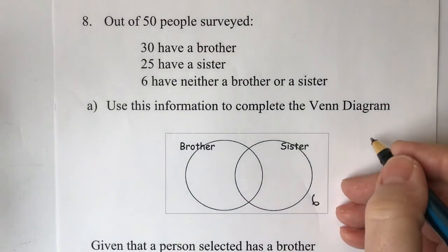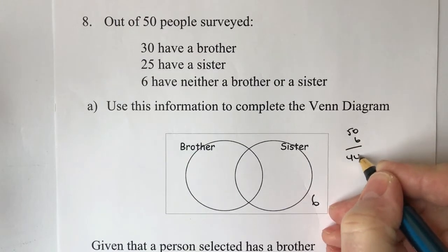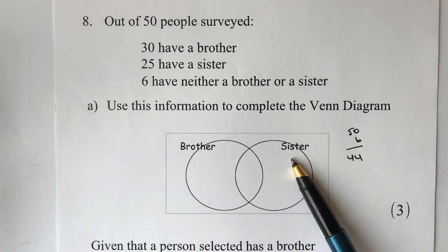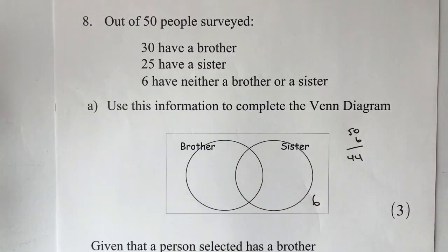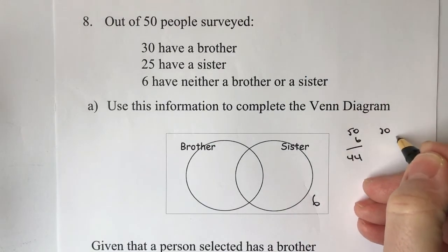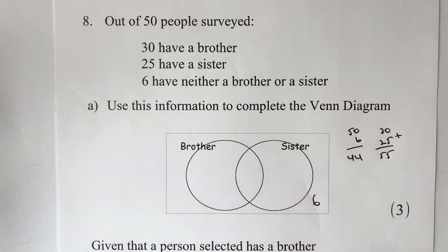Out of the 50 people, if we take 6 away, 44 people are going to be represented by the brother and sister circles. Now this is where it gets a little bit more complicated, because 30 have a brother plus 25 have a sister means 55 people have a brother and a sister combined.